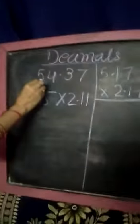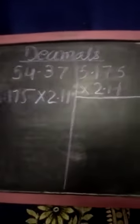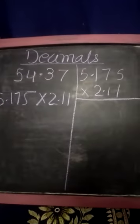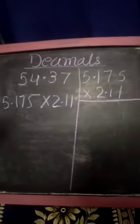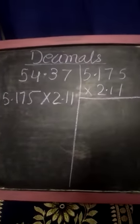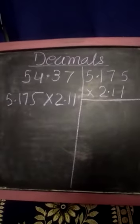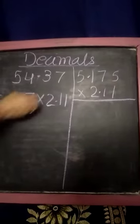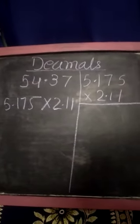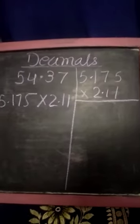Now, in 54.37, this is called the decimal point. These are called decimal numbers. In this chapter, we are going to learn about multiplication of decimals and division of decimals, addition of decimals and subtraction of decimals.